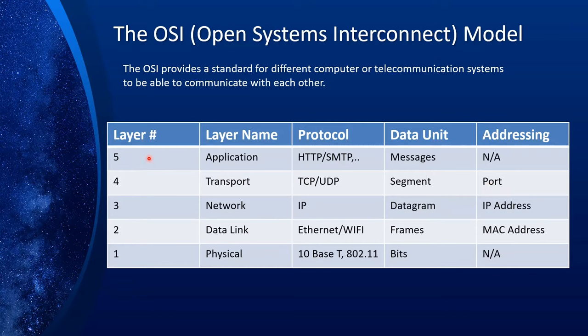The last layer, layer five, is called the application layer. Various protocols are defined here, such as HTTP and SMTP. This is basically the data format that the sender and receiver agree on to send or receive. The data unit is message, and there is no addressing scheme defined here.